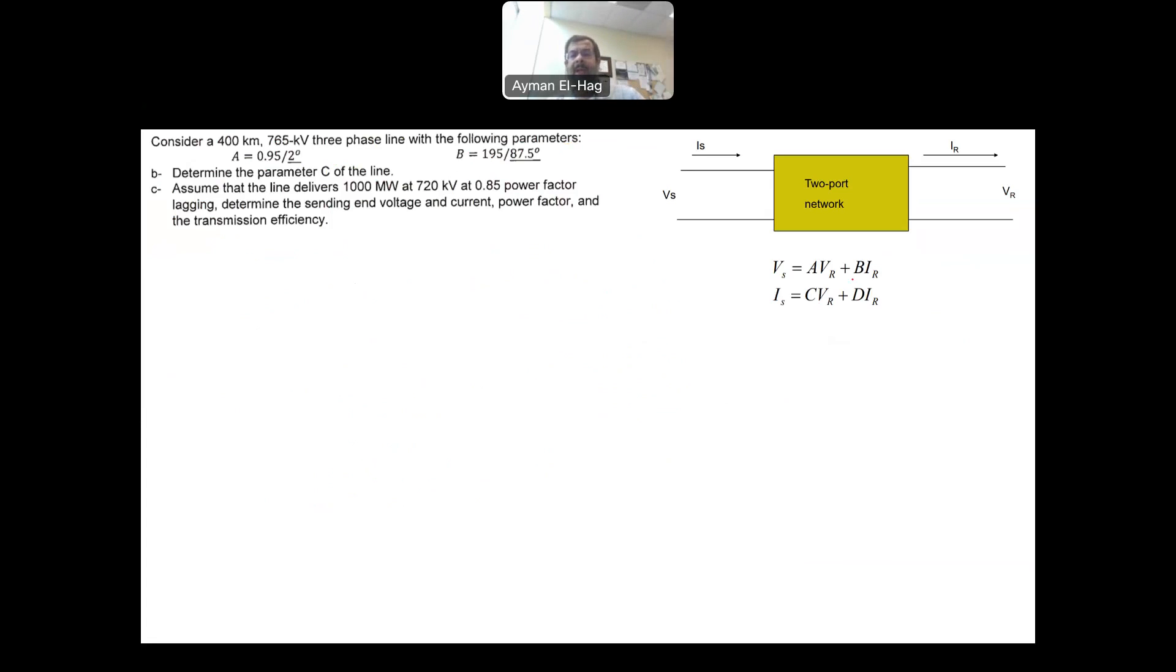Now you want to apply that ABCD formula. So it says you assume that it delivers. So at the receiving end, you have 1000 megawatts. And the voltage here, which as we know, always the voltage given to you is the line to line voltage. For the two port network, it is only the phase voltage. So the V line to line at the receiving end is 720 kilovolts and the power factor 0.85 lagging.